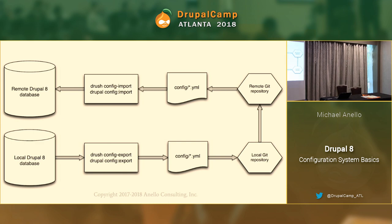You run a drush command to export your configuration. That copies your config from the database and writes it out to a bunch of configuration files on your file system. Then you do git add, commit — it's in your local repo. Git push — it's in your remote repository. Then you pull those files into your dev environment. At that point, they're just files — a copy of your configuration. When your site is running, it pulls active configuration out of the database. So we need the mirror image: a config import command.